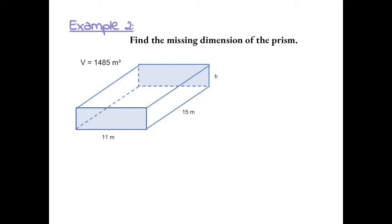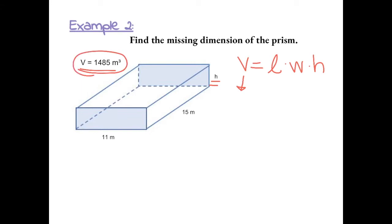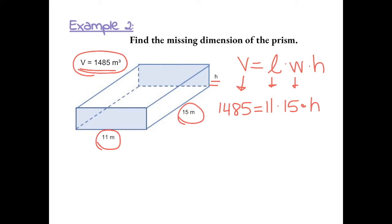Example 2: Find the missing dimension of the prism. In this case, we're given the volume and we don't have the height. Starting off with the formula volume equals length times width times height, let's plug in the information we're given. I can replace V with the volume, which is 1485, equal to the length of 11 times the width of 15 times the height, which we don't know, so I'll leave that as h.